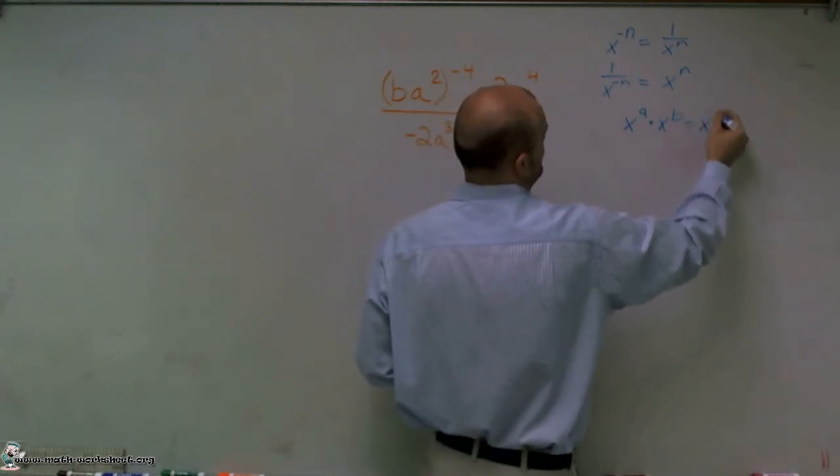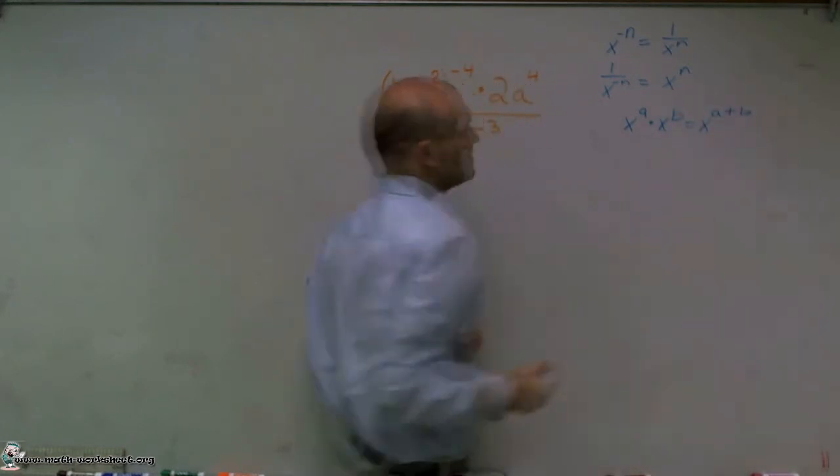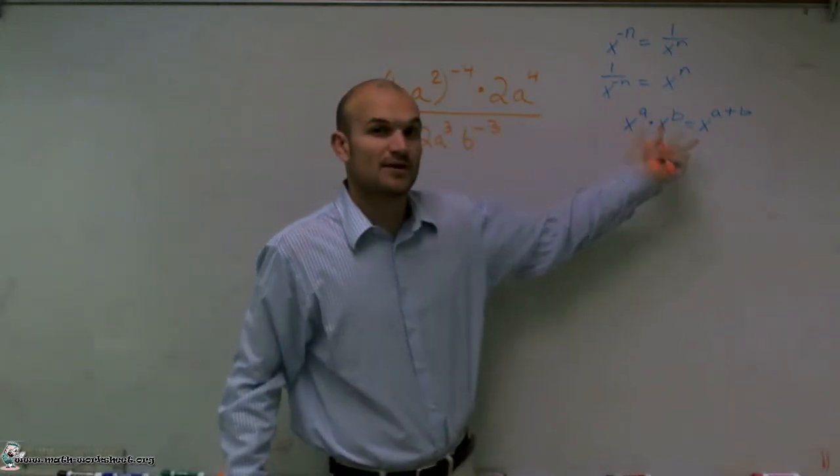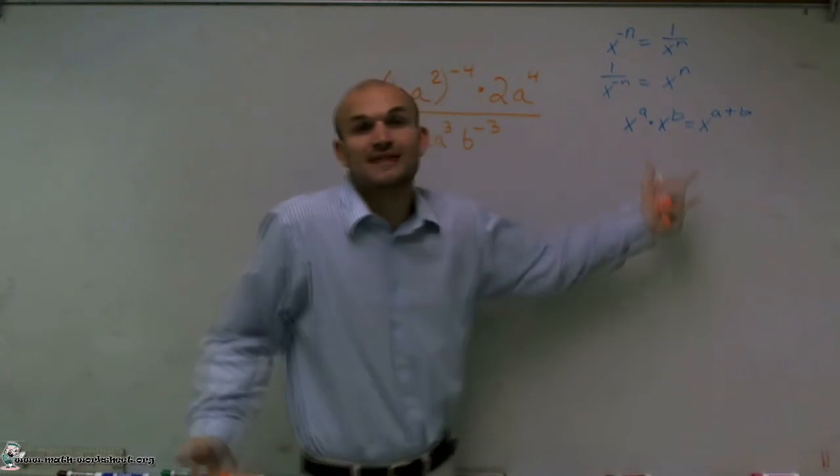If I had x to the a times x to the b, that's going to equal x to the a plus b. What that means is if I'm going to multiply two numbers with the same base, and they both have exponents, to solve that, I'm just going to add the exponents.